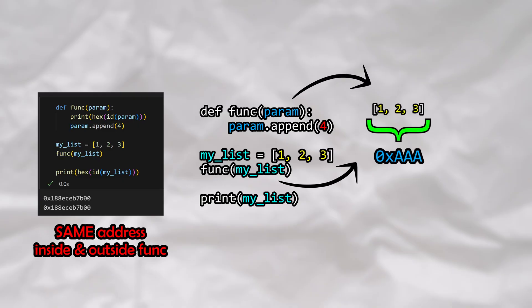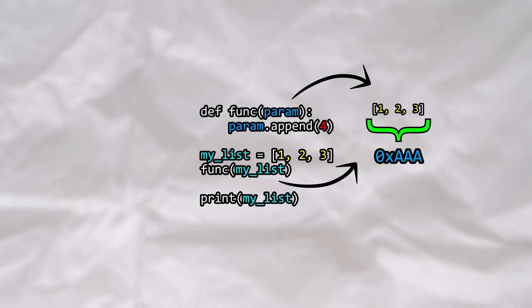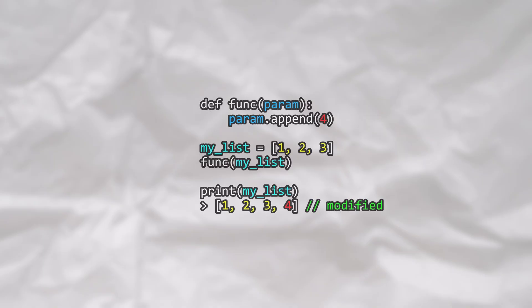To visualize this, we can imagine that both the original variable and the parameter within the function both point to the same object. Now comes the fun part. Since the parameter in the function references the same object, when our function modifies our list, it is actually modifying the original list as well.